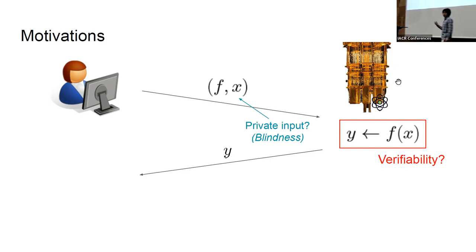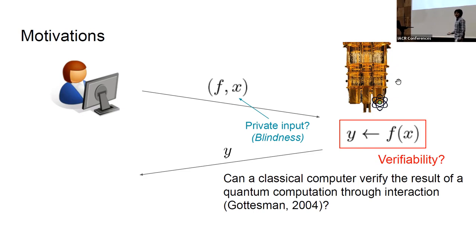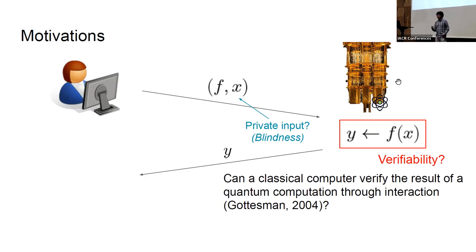There is also a second issue, which we call verifiability: we want to know if the server is doing the computation correctly, or if it is just doing some strange stuff and sending us nonsense. More than 15 years ago, it was asked: can a classical computer verify the result of a quantum computation through interaction?